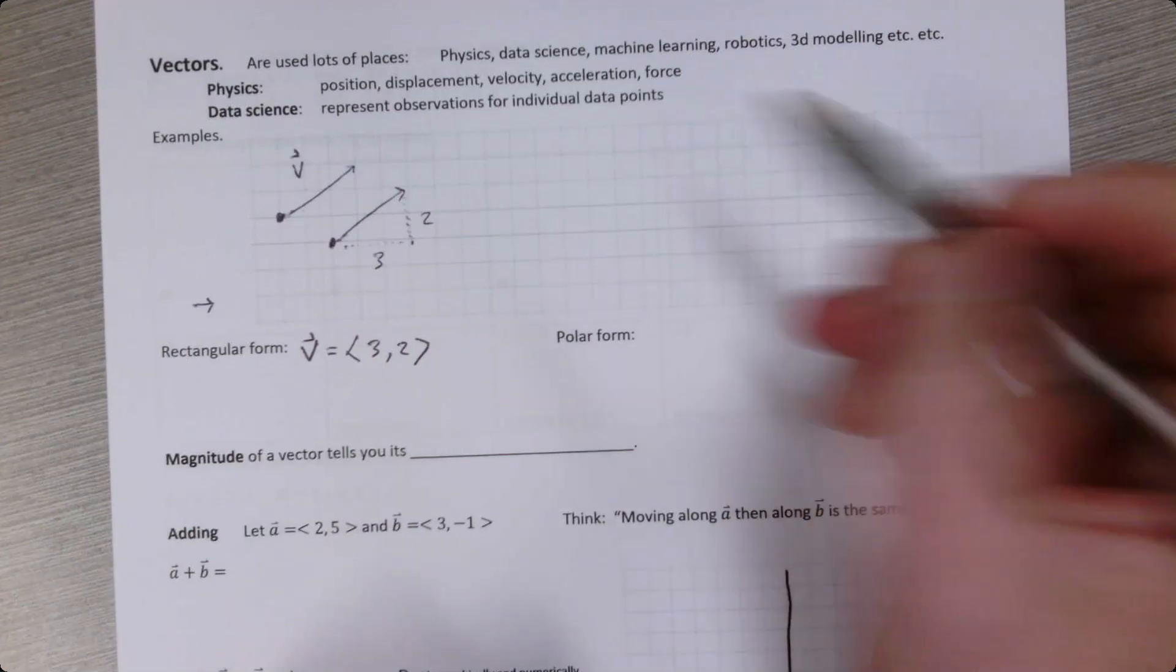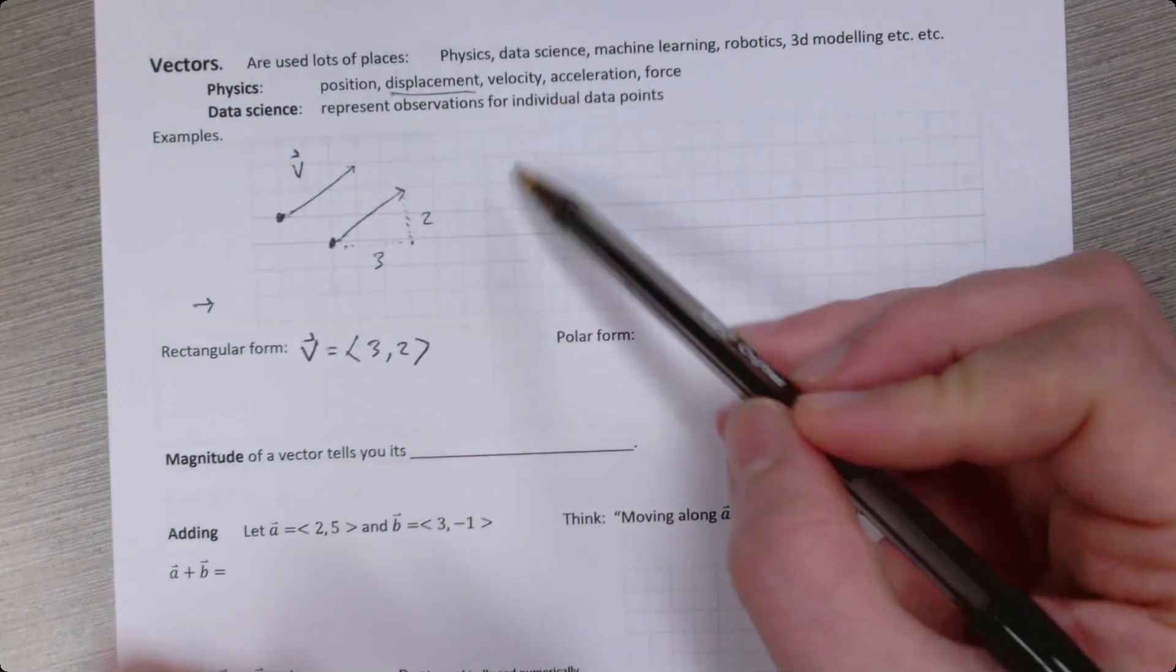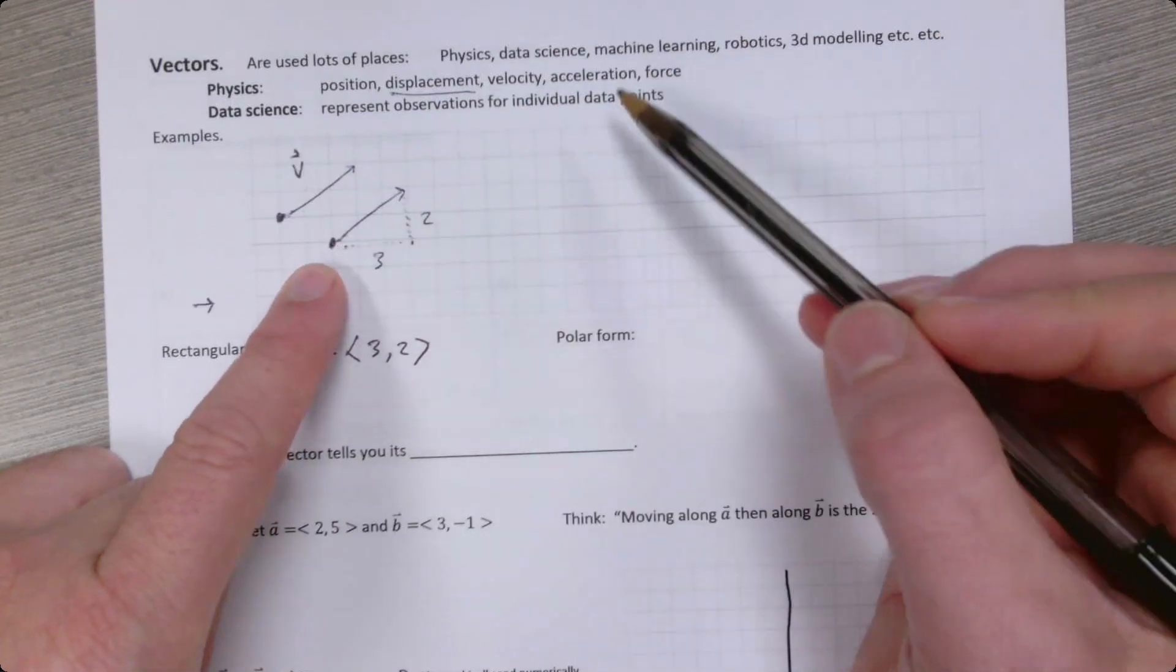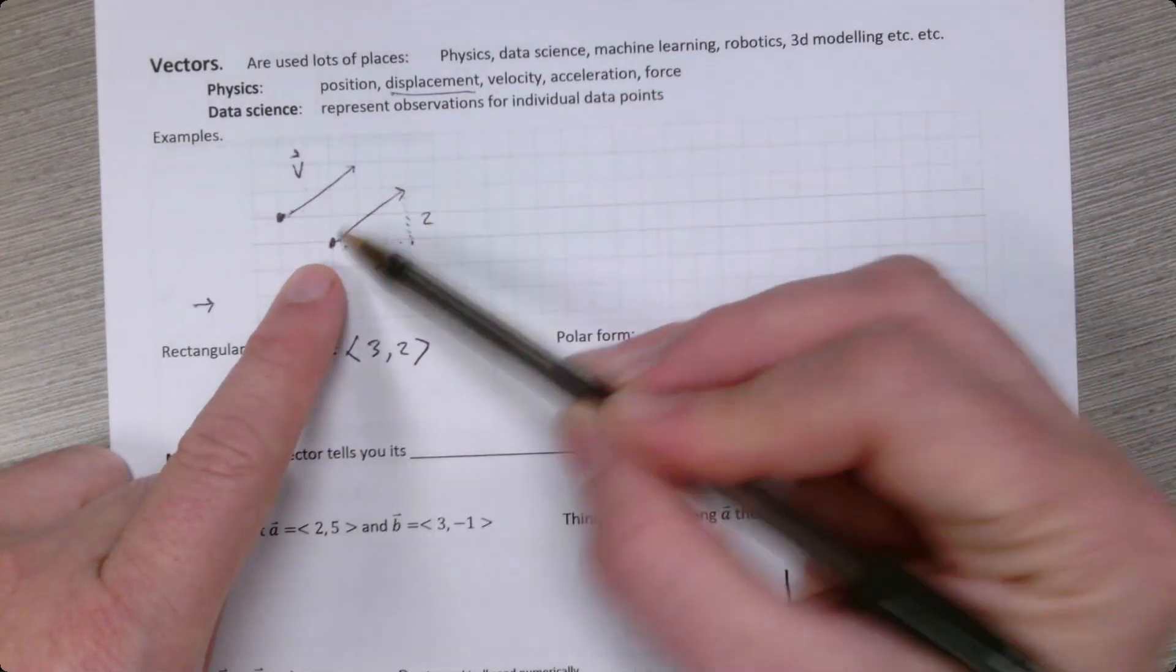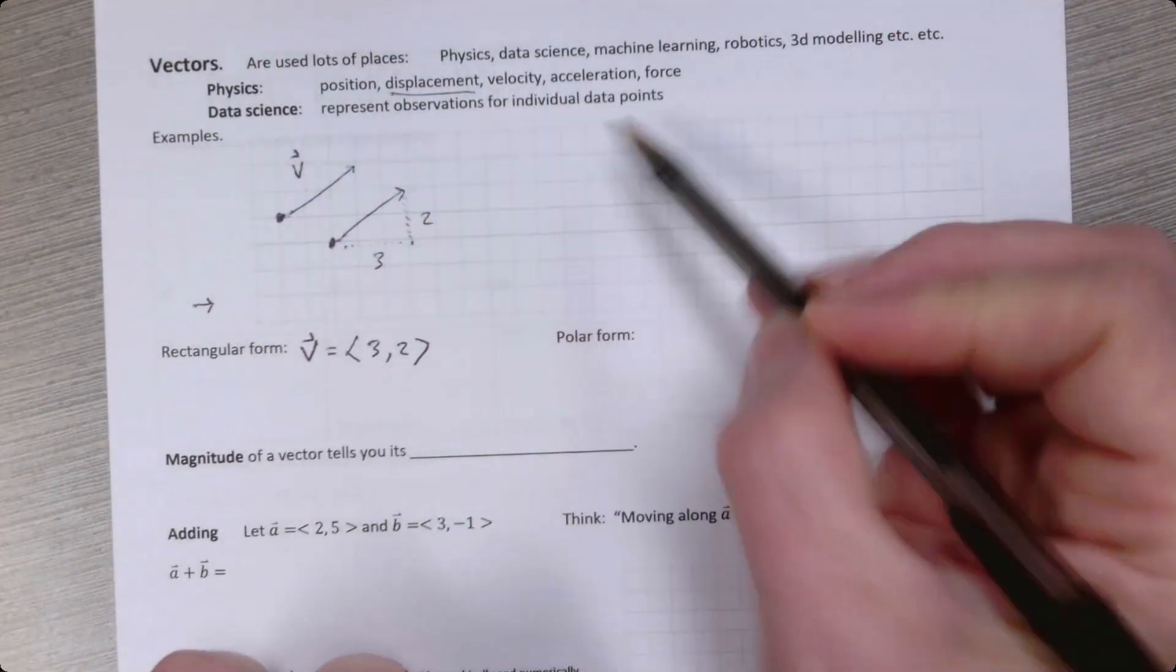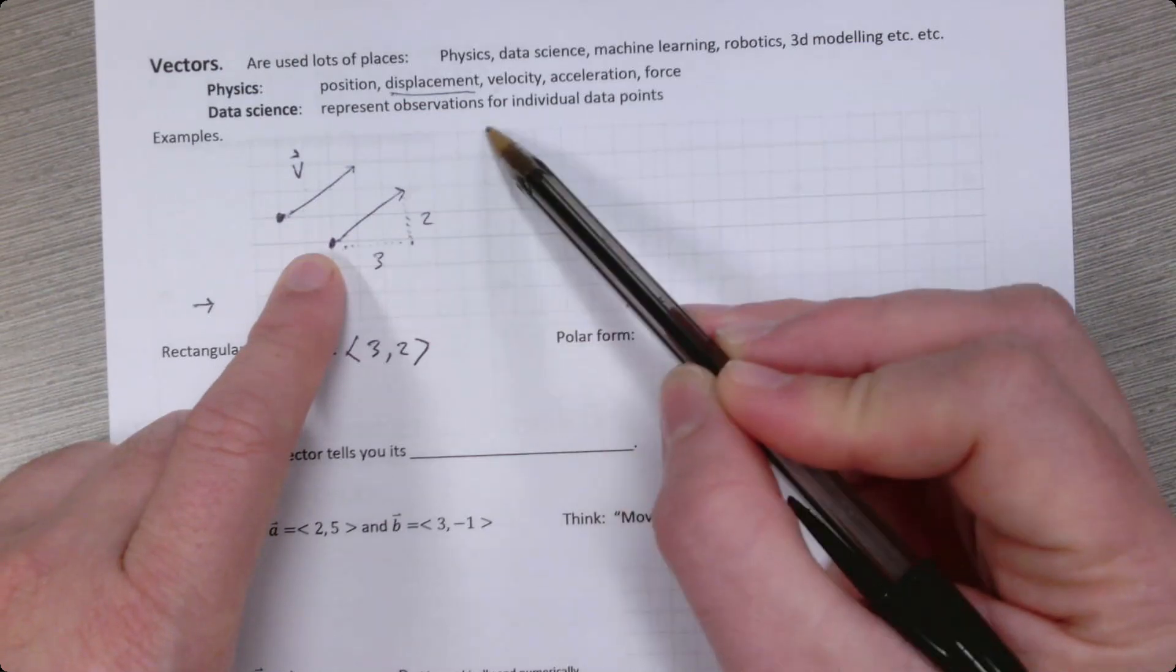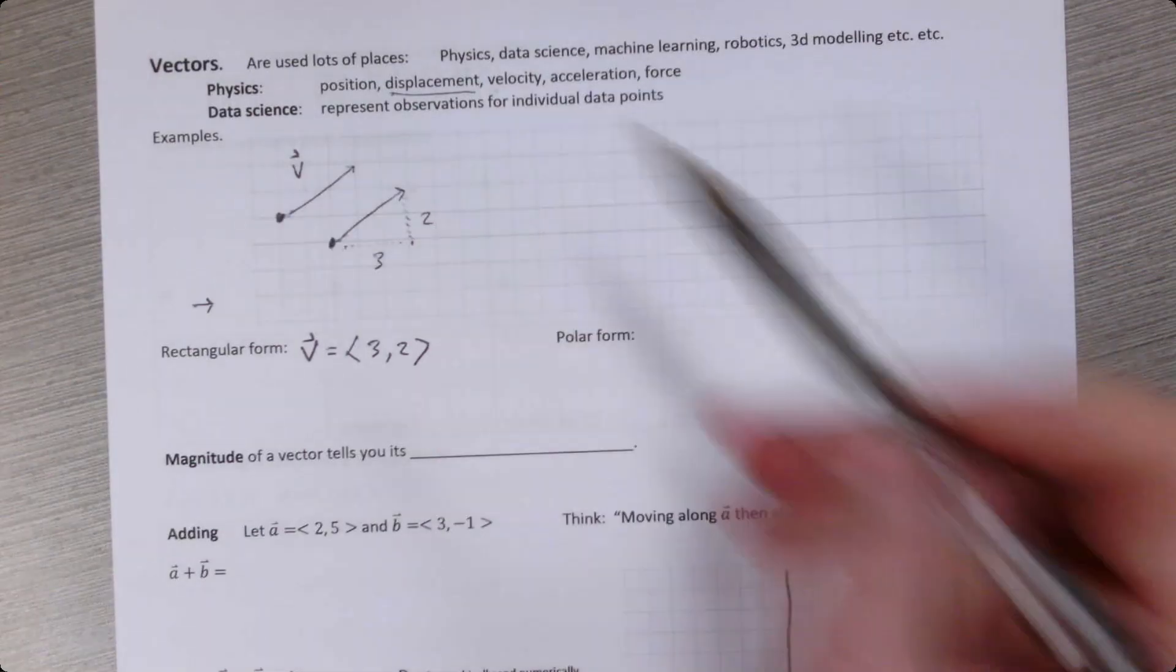You could also think about them not as force, but as a displacement, for example. So we're thinking this is going to represent a motion. The object starts here, and at the end of a certain amount of time, we could call it one second, we want to say the object's going to end here. So we're describing that displacement. You could describe it as velocity. We're saying in one second, the object's going to travel that far. In a second second, it would travel this far. In another second, it would travel that far. So you can see why they might be helpful.